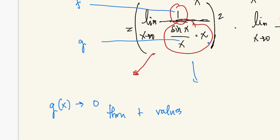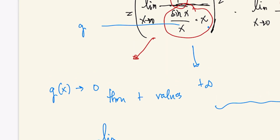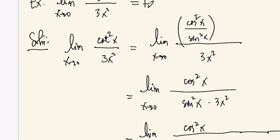As x approaches 0 through positive values, cosine squared x approaches 1 while 3x squared approaches 0 from the positive side, so this limit is positive infinity. Using the theorem that the product of a finite constant and positive infinity is positive infinity, the final answer is positive infinity.